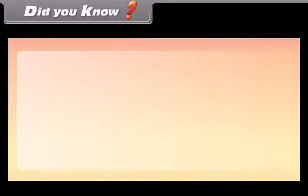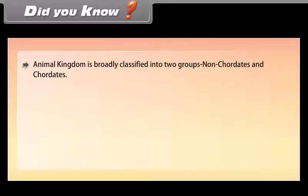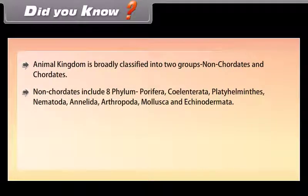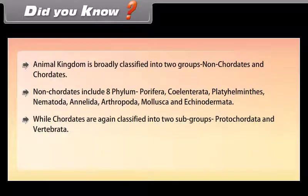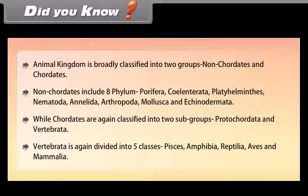Animal kingdom is broadly classified into two groups: non-chordates and chordates. Non-chordates include 8 phyla: Porifera, Coelentrata, Platyhelminthes, Nematoda, Annelida, Arthropoda, Mollusca, and Echinodermata. Chordates are classified into two subgroups: Protochordata and Vertebrata. Vertebrata is again divided into five classes: Pisces, Amphibia, Reptilia, Aves, and Mammalia.